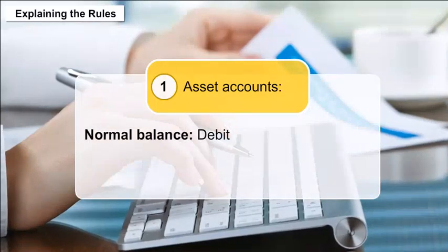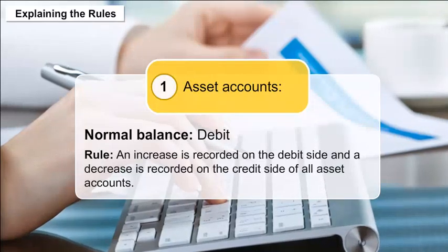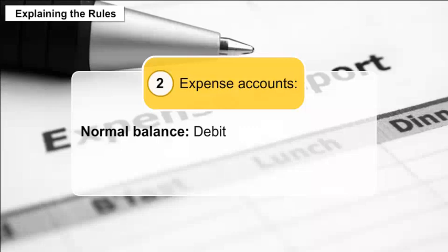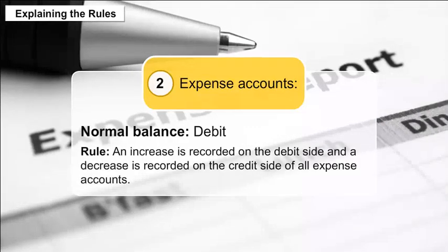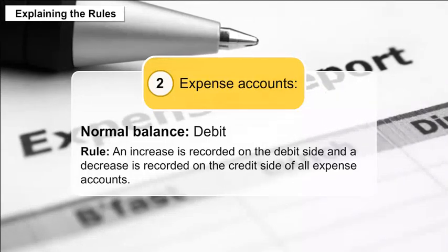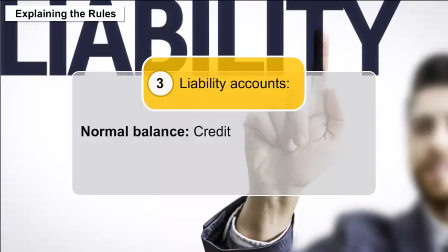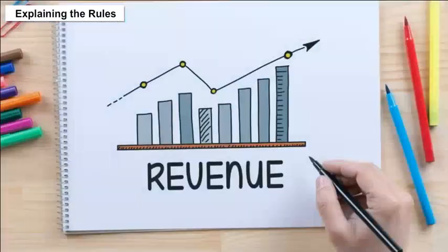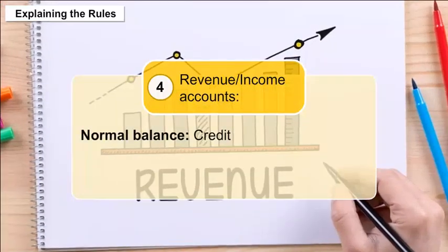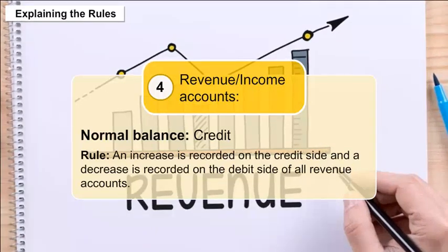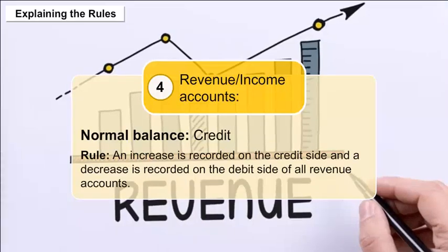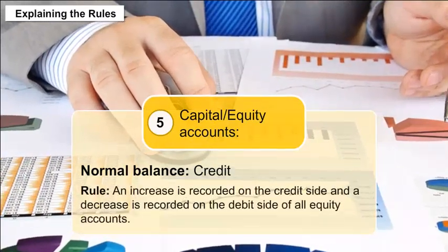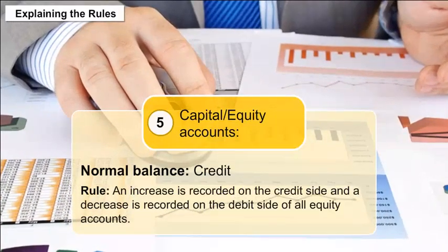Explaining the rules by account type: Asset accounts have a normal debit balance — an increase is recorded on the debit side and a decrease on the credit side. Expense accounts also have a normal debit balance — an increase is recorded on the debit side and a decrease on the credit side. Liability accounts have a normal credit balance — an increase is recorded on the credit side and a decrease on the debit side. Revenue or income accounts have a normal credit balance — an increase is on the credit side and a decrease on the debit side. Capital or equity accounts have a normal credit balance — an increase is on the credit side and a decrease on the debit side.